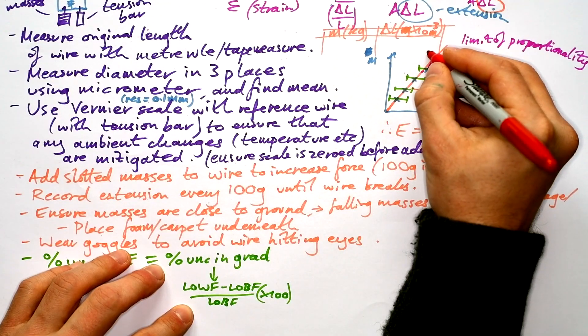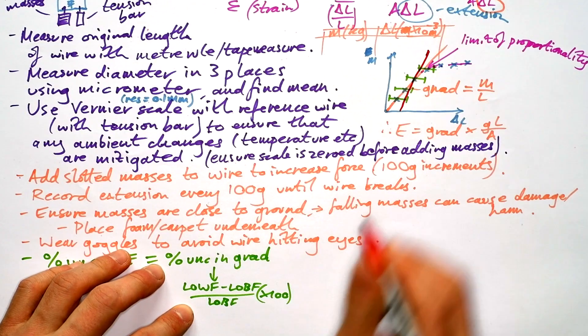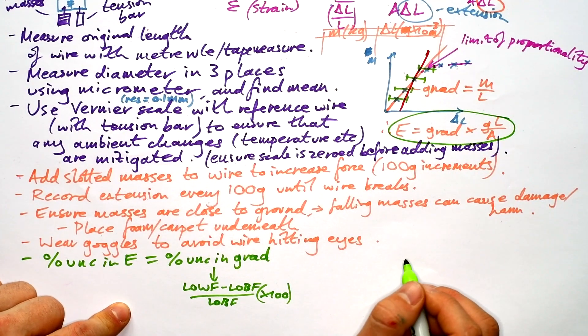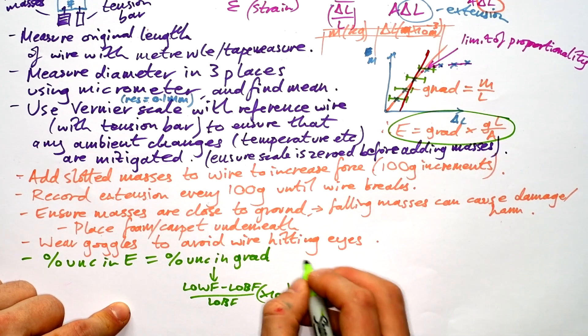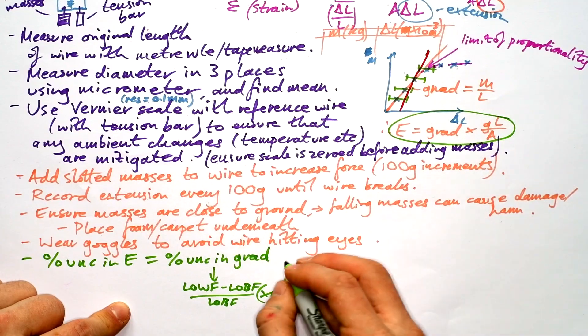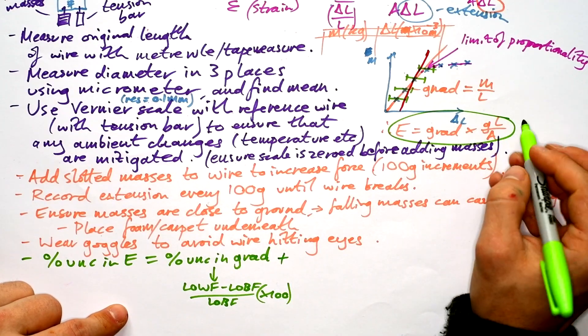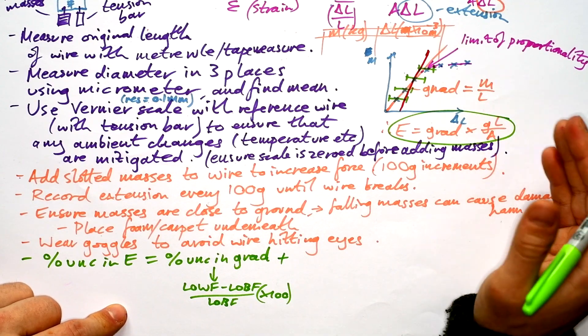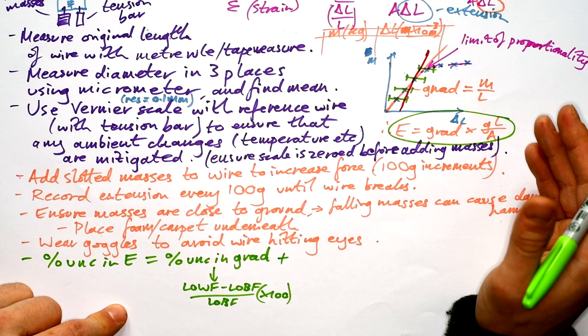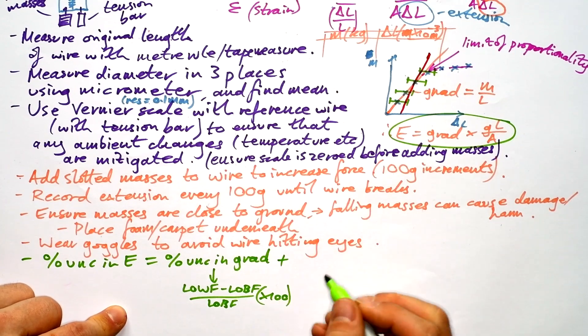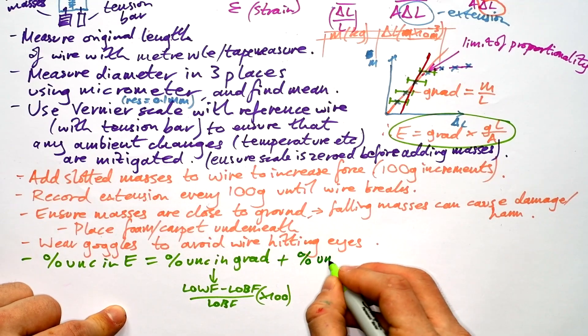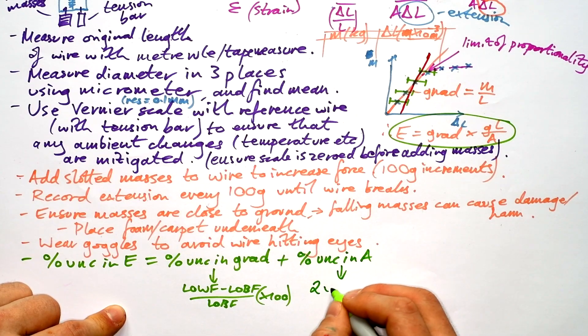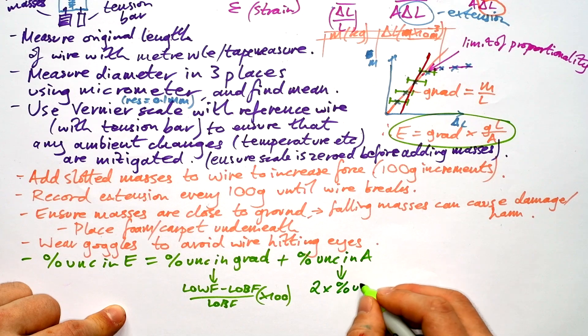So let's say that that's my line of worst fit there. But because we're calculating our Young's Modulus from the gradient and gL over A, that means that we're going to have to add the uncertainty with this. But there's no uncertainty with g. There's hardly any uncertainty with the original length because it's say a meter long, but the resolution is a millimeter. So that's going to be like 0.1%, depending on what the resolution of your ruler is. And so I'd say that the only other thing is going to be your percentage uncertainty in the cross-sectional area. And obviously that's going to be two times the percentage uncertainty in your diameter.